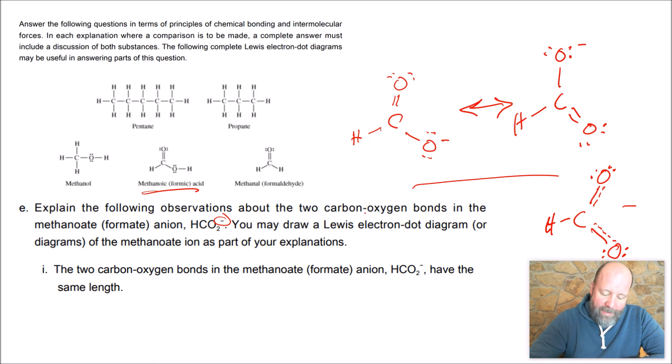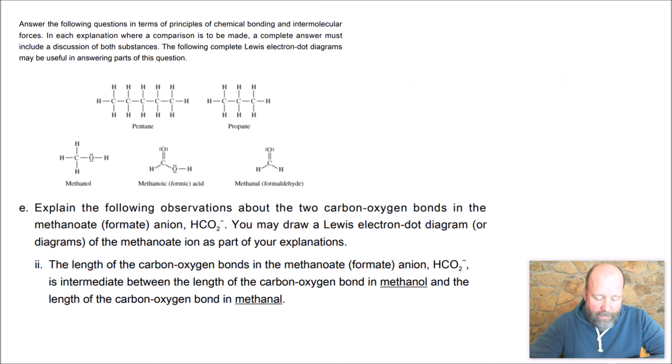So to explain that observation that they have the same length, you would say there are two different resonance structures. And so in reality, these are between a single bond and a double bond because there is a pair of electrons that goes back and forth between those two bonds.